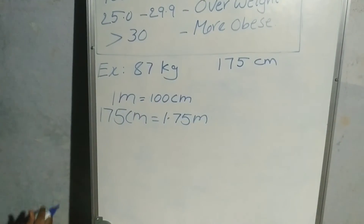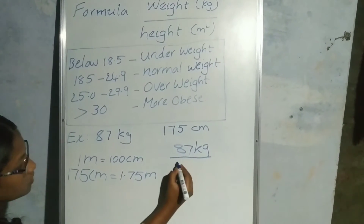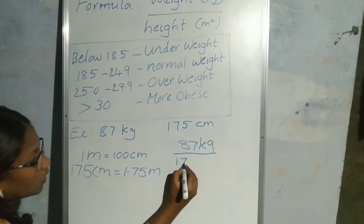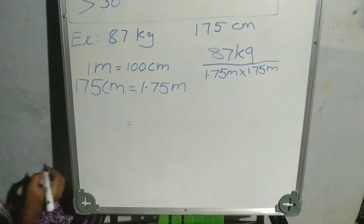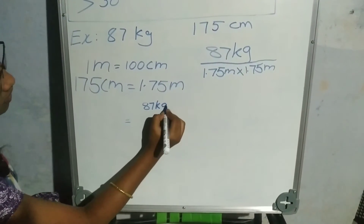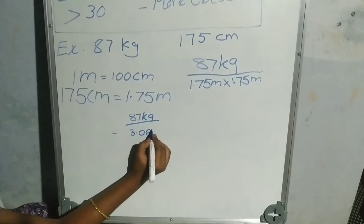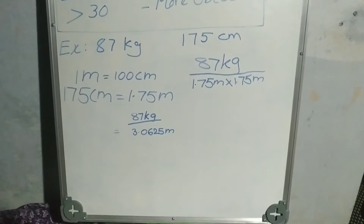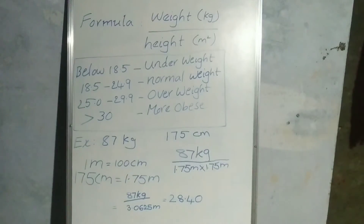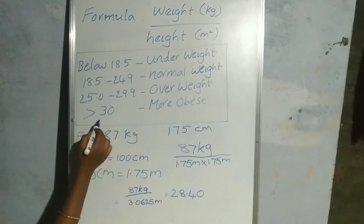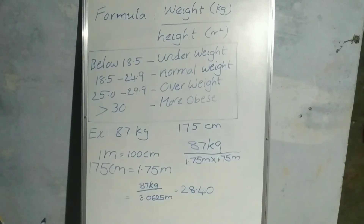Now let us apply this in the formula. That is 87 kg divided by 1.75 multiplied by 1.75. We get 3.0625 square meters. Dividing the weight by the height squared, we get 28.40. Checking this with the table, 28.40 is between 25.0 and 29.9, so the person is suffering from overweight.